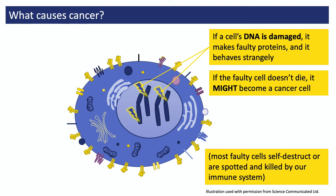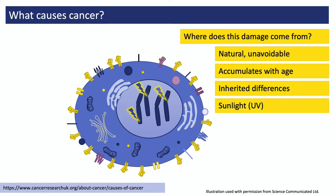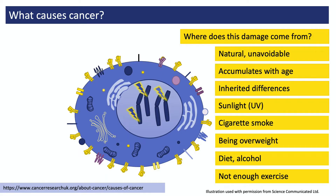Usually, faulty cells self-destruct, or they're spotted and destroyed by our immune system. But if a faulty cell somehow survives, it might eventually cause cancer. There are many reasons why the DNA in our cells becomes damaged — including the natural unavoidable damage that accumulates in our cells, especially in cells that multiply often. When cells multiply, they have to duplicate all of their DNA, and they make a handful of mistakes every time they do this. Cells also perform thousands of chemical reactions every second, and these reactions also cause damage to our DNA. And of course, the things we do can add to this damage, things like going out in the sun. If you want to understand more about the things that damage our DNA and affect our risk of cancer, do look at the Cancer Research UK website.